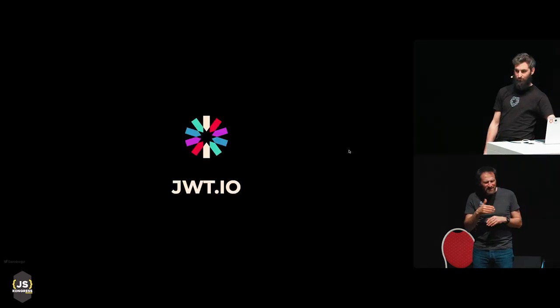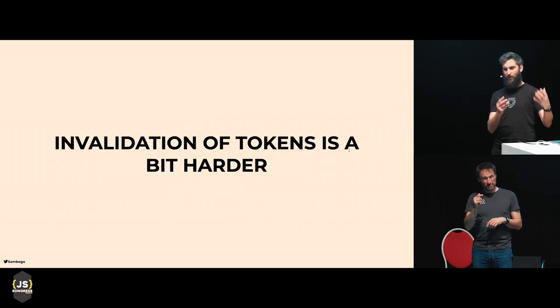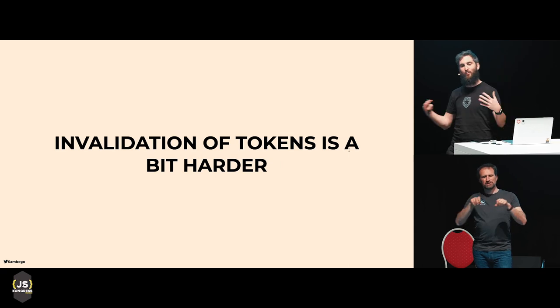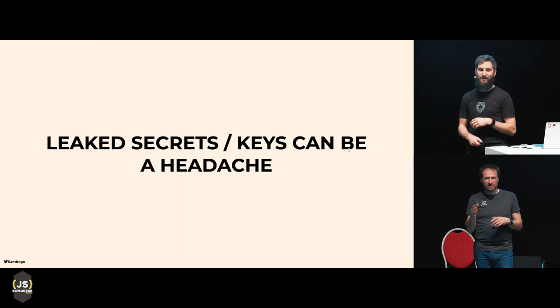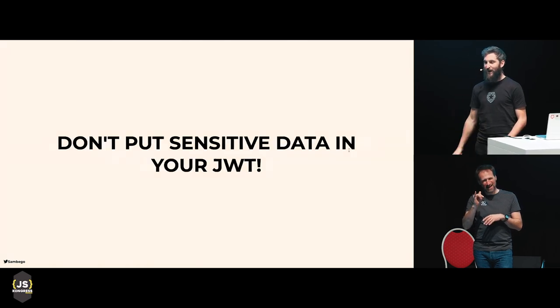Are there any downsides to JSON Web Tokens? Invalidation of tokens is a bit harder. Imagine you start working for a company today but they fire you on the spot — you're still logged into their systems and your JSON Web Token might be valid for a week. To invalidate it, you have to create some kind of blacklist. Also, if you leak your secret or key, they can forge your JSON Web Token — so never leak your secrets and keys. And don't put sensitive data in your JWT, because the payload and header are just base64-encoded JSON, so anybody can decode them.